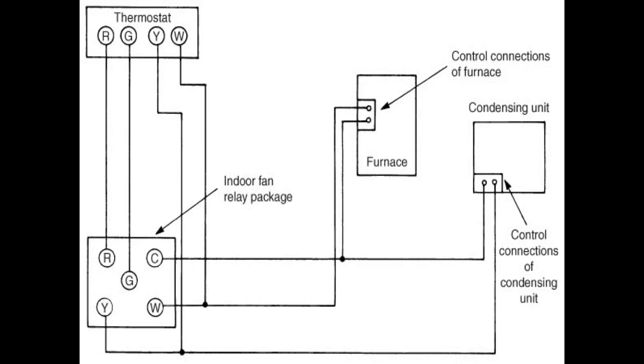This is an example of how it's wired on the control side. You have your R, G, Y, and W on the thermostat. Connect them to the identical terminals on the fan center. Sometimes the thermostat might have a C terminal. Connect that to common.